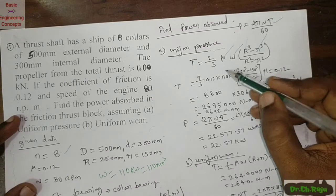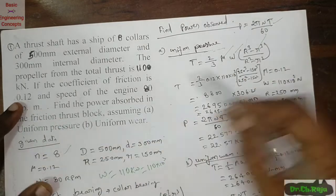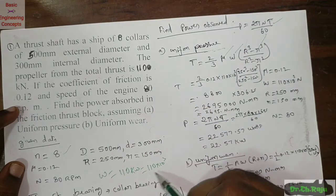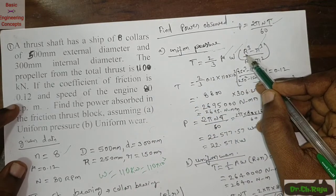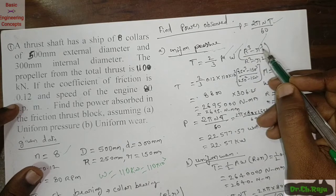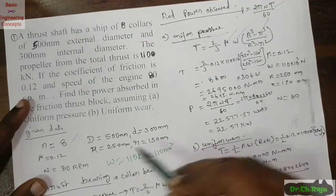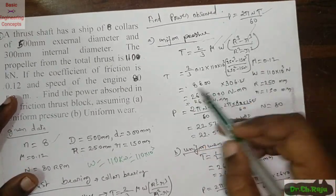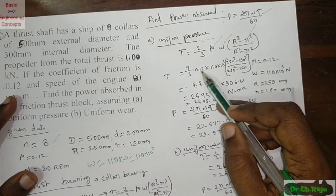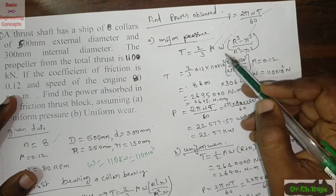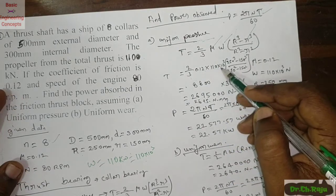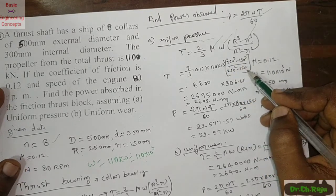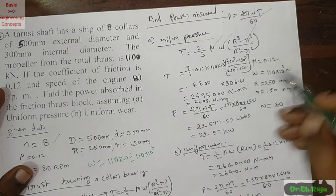All values are given: μ = 0.12, W = 110 kN = 110 × 10³ N. We convert diameters to radii, giving R = 250 mm and r = 150 mm. Substituting: T = (2/3) × 0.12 × 110 × 10³ × (250³ − 150³)/(250² − 150²).